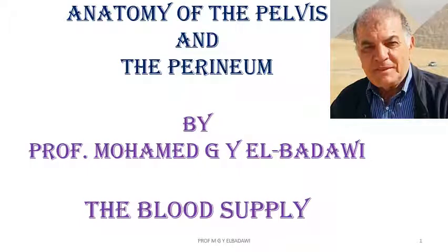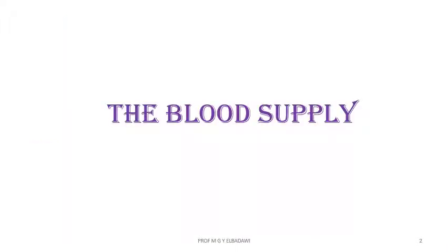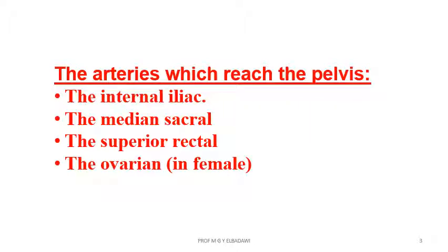In this part of the anatomy of the pelvis and perineum, we are going to describe the blood supply of the pelvis. We start by the arterial supply, and there are four arteries which can reach or will reach the female pelvis.